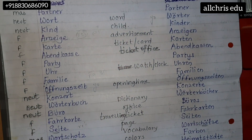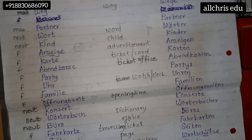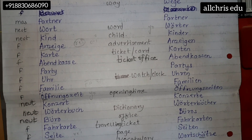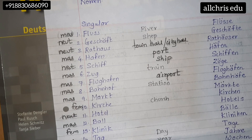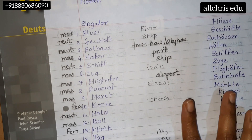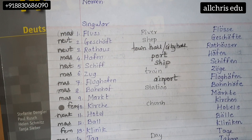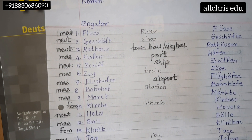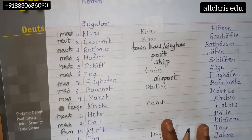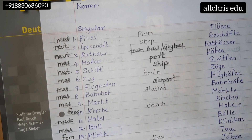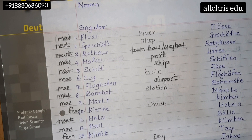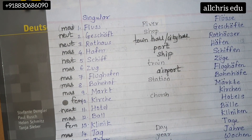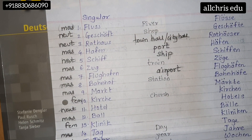Go through each and everything. Wherever the meanings are not written, the meaning is same as in English. Please, as we are always doing it in the same manner, classify the nouns — male on male pages, neutral on neutral pages, female on female pages — and do send it to me for checking. Send your audios also for each and every word. Practice first and then only send it to me.